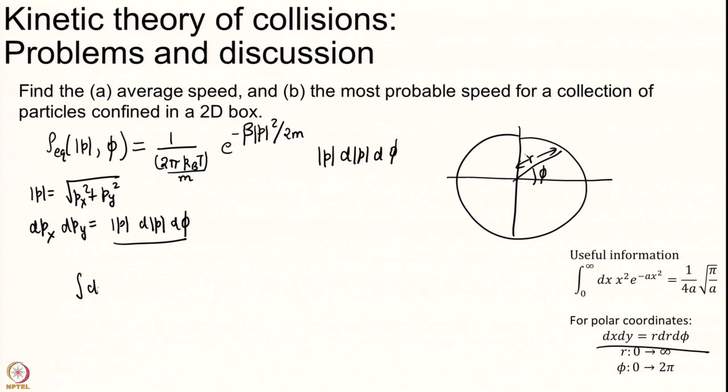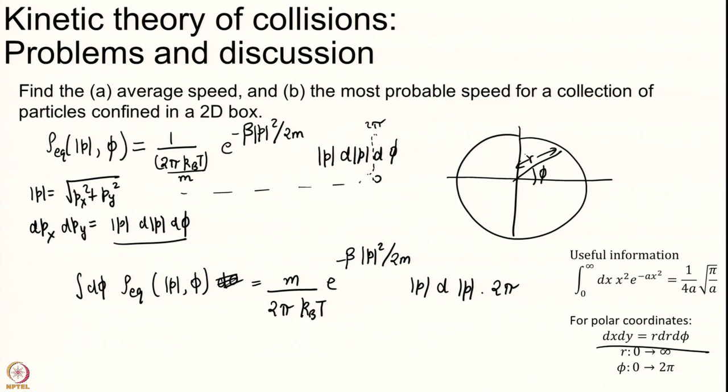This is easy. We note that most of the terms here are independent of phi actually everything is independent of phi. And I simply multiply this by 2 pi. I get an integral here from 0 to 2 pi. Everything here is independent of phi. So it is an easy integral. I will just cancel 2 pi s.